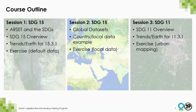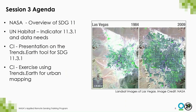Now that we are in the final session, we're really going to shift our focus from SDG 15 to SDG 11. For today, I'll provide a very brief overview of SDG 11, and then we will hear from Dennis about indicator 11.3.1 and the data needs. Then we will also hear from our CI colleagues, who will be providing a presentation on the Trends.Earth tool for SDG 11.3.1, and then we'll be launching right into the exercise for urban mapping.